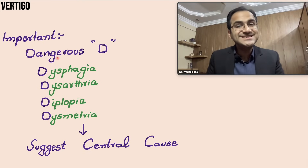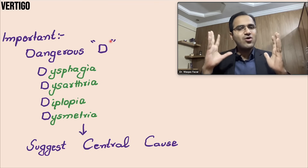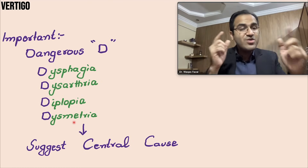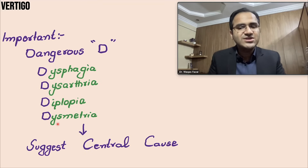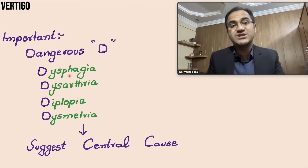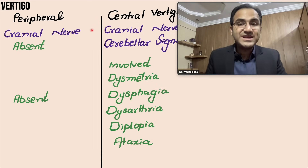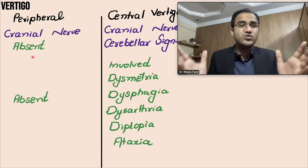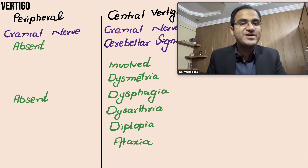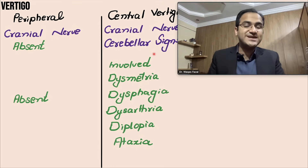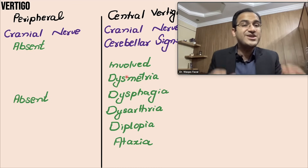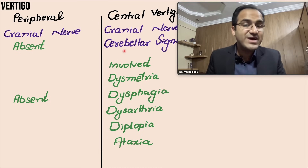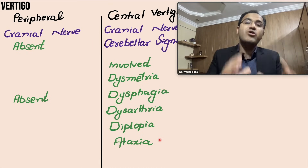Remember the 'dangerous D's': if the patient has dysphagia, dysarthria, diplopia, or dysmetria with incoordinated movements, these point toward central causes. In peripheral vertigo, cranial nerve findings will be absent because everything is normal in the brain. In central vertigo, cranial nerve palsies and cerebellar signs will be present — including dysmetria, dysphagia, dysarthria, diplopia, and ataxia — all pointing toward central vertigo.